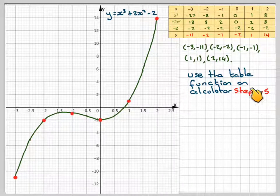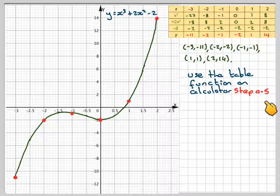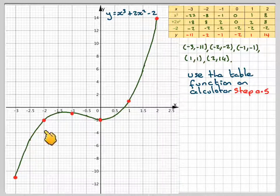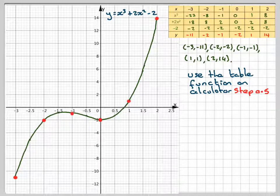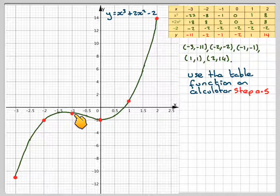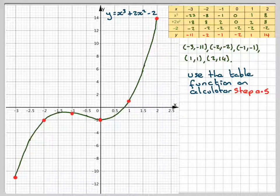And this is why using the calculator function, which steps to 0.5, will make for a better curve. Because, in fact, here it actually goes slightly higher than minus 1.